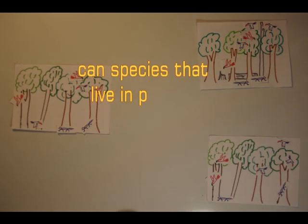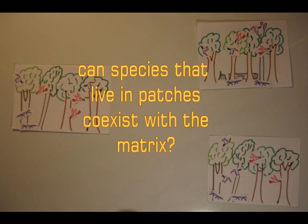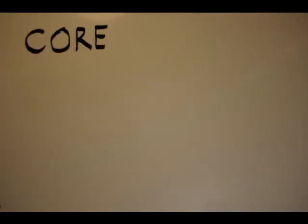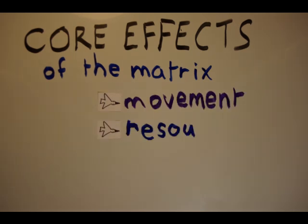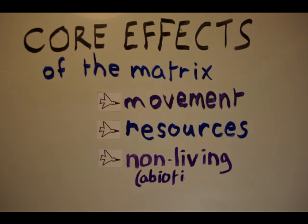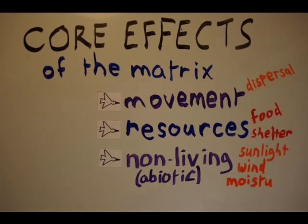To answer that question, we need to understand how The Matrix affects species living in patches. The Matrix influences species living in patches through three core effects: effects on movement, effects on resources like food, and effects on the abiotic or non-living environment.